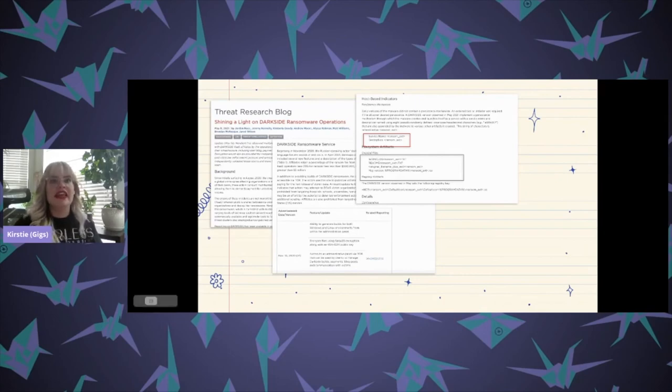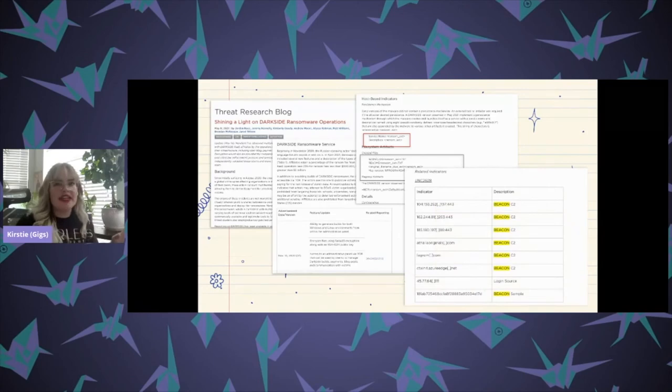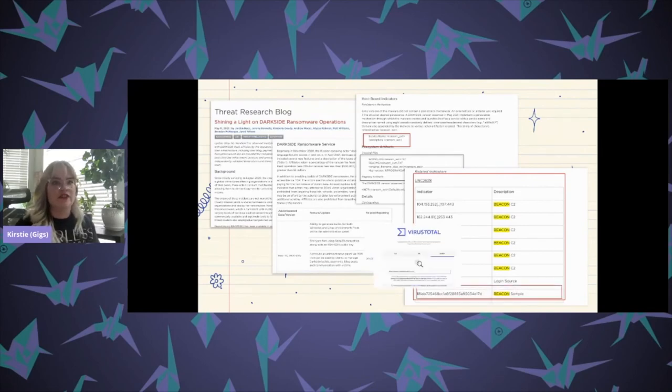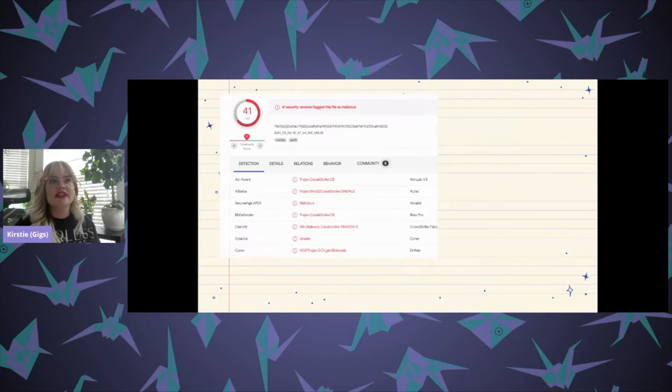Right? So then at the end of the blog, we see some host-based indicators. There's some network-based indicators, IP addresses, domain names. And then at the end of this, we see an MD5 hash for a beacon sample. So let's go ahead and search that in VirusTotal. Awesome. Don't upload anything to VirusTotal. Just don't do it. Just honestly, just don't do it.